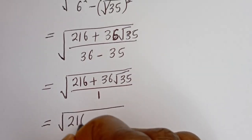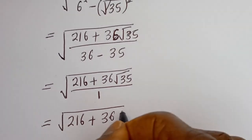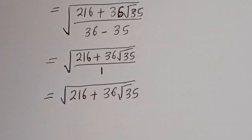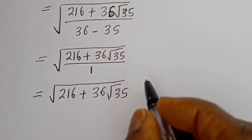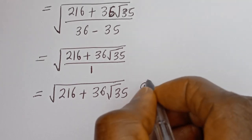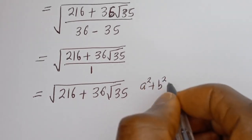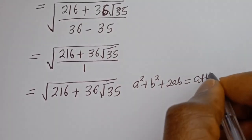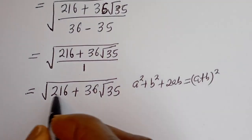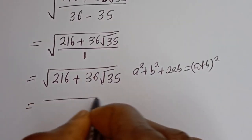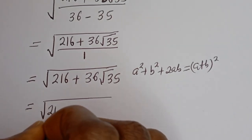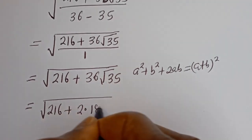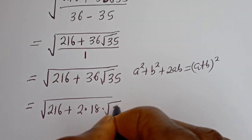Now we need to express this in the form a squared plus 2ab plus b squared equals (a + b) squared. We have square root of 216 plus 36 root 35, and we can rewrite 36 root 35 as 2 multiplied by 18 multiplied by root 35.